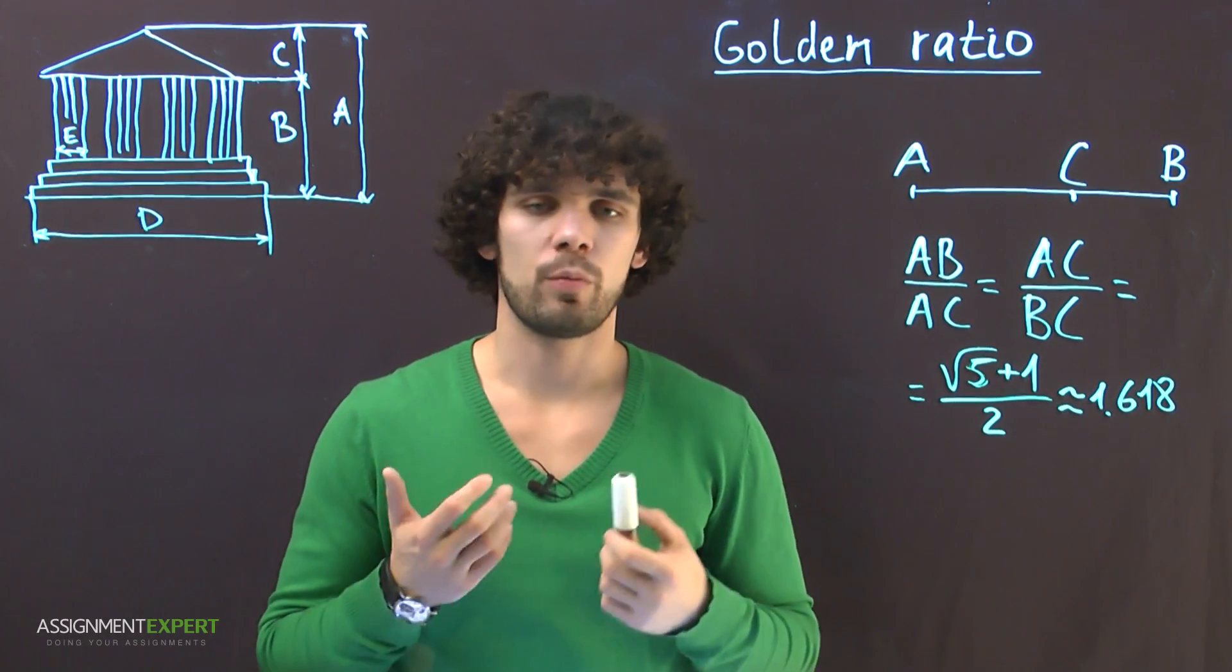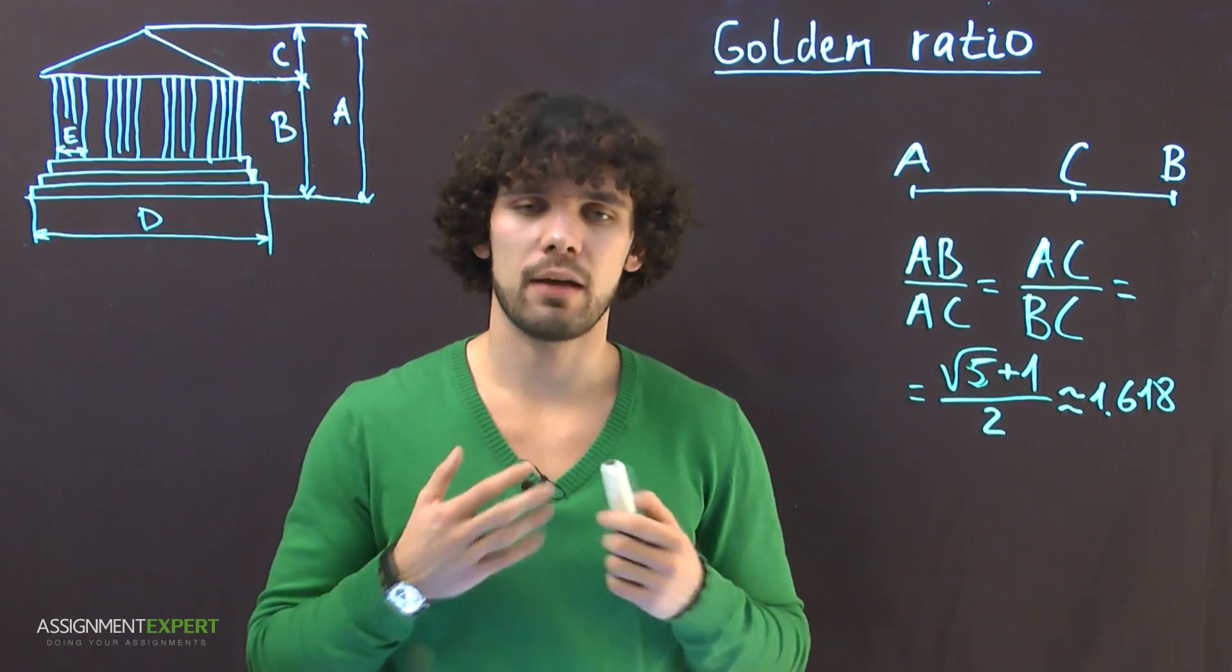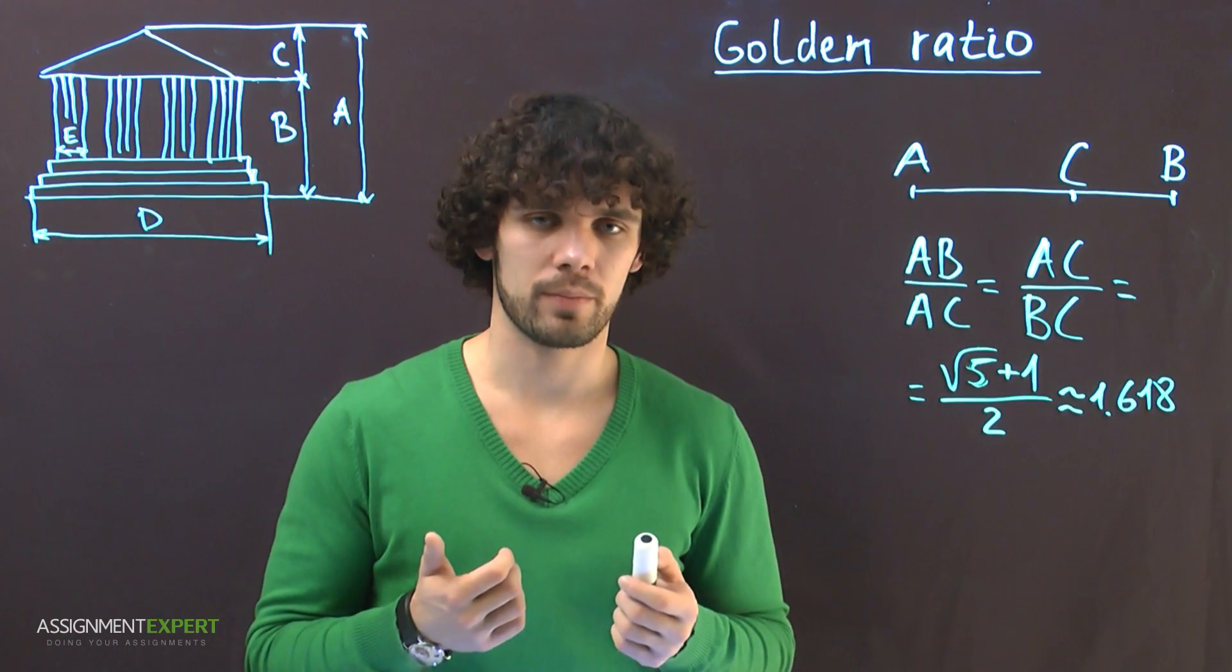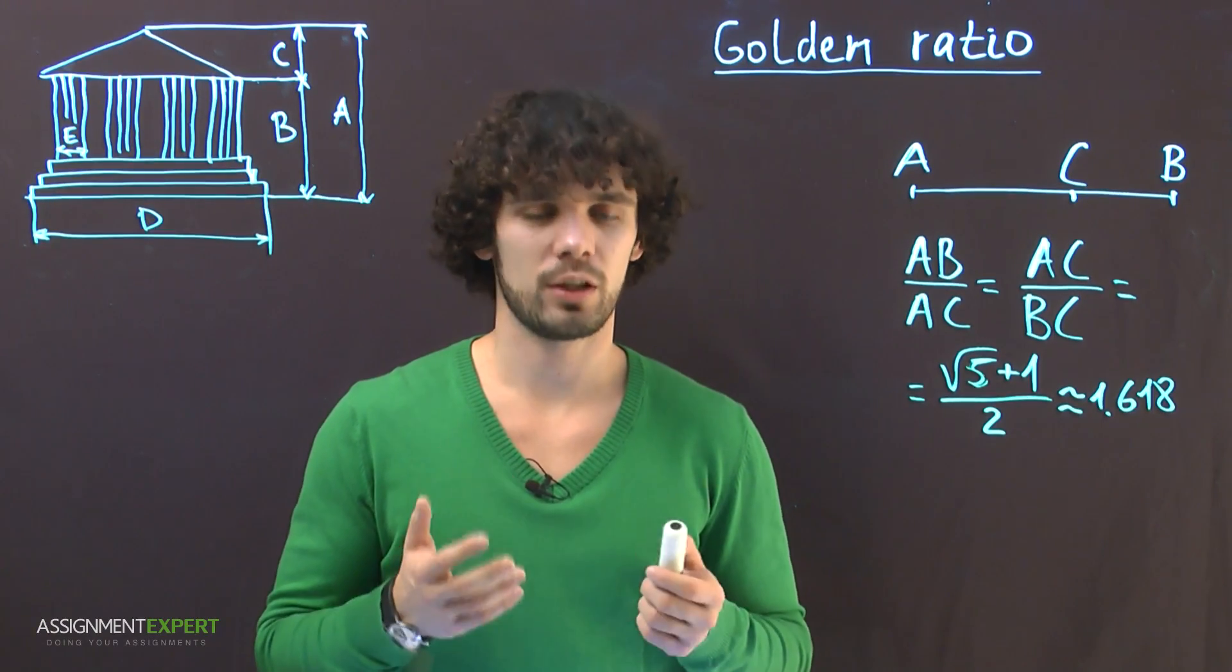People have always been searching for perfection in everything. Ancient Greeks, for instance, used to believe that everything complies with the laws of harmony. And in the 17th century, the golden ratio was observed even in biology.